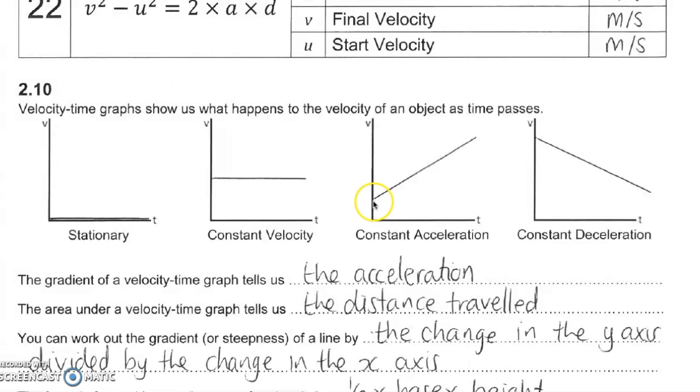If you've got constant acceleration, it means our velocity is slowly increasing. So it means the line is going to be like this. And again, we've said deceleration is literally the opposite. So it should follow this trend.